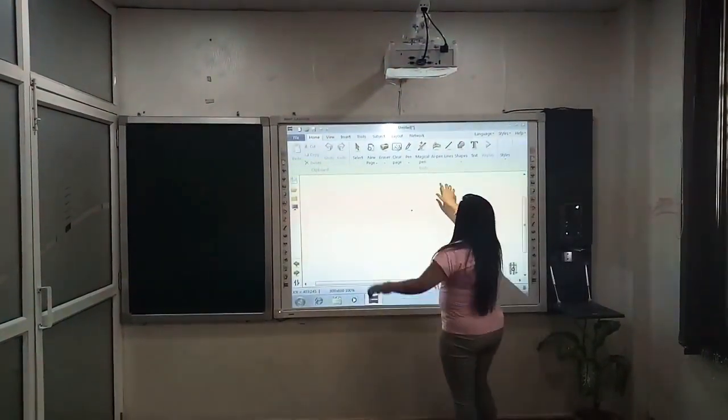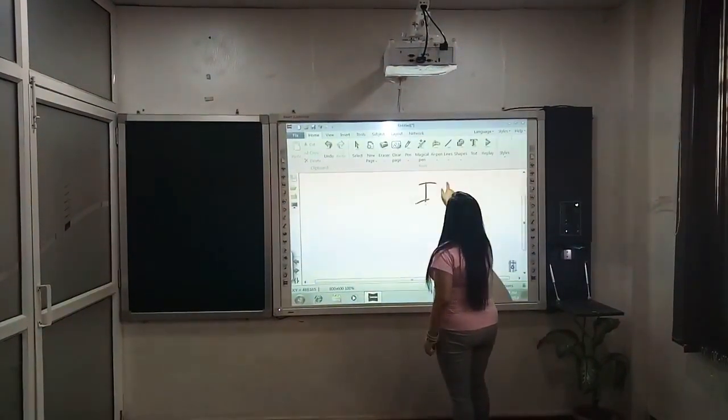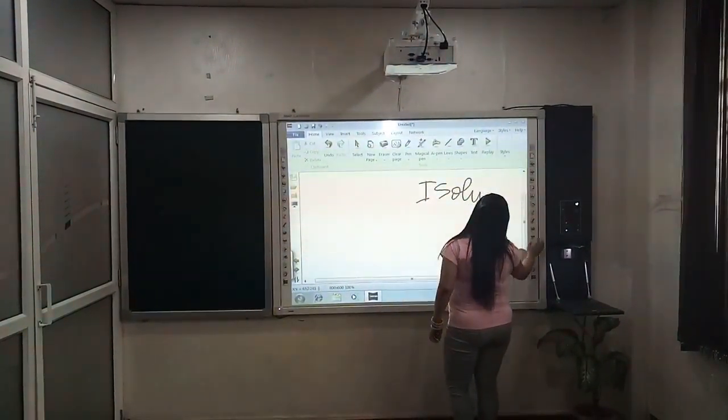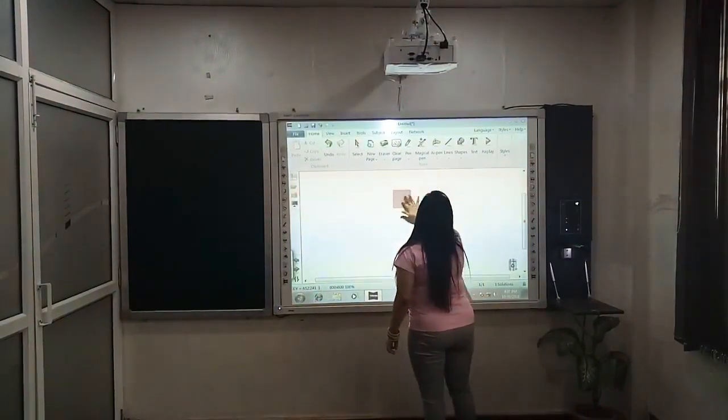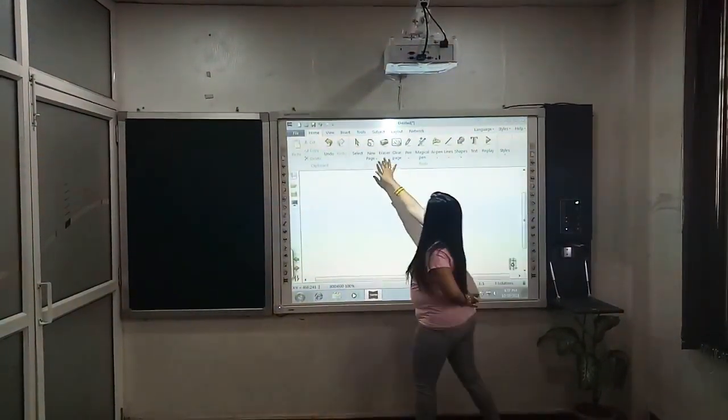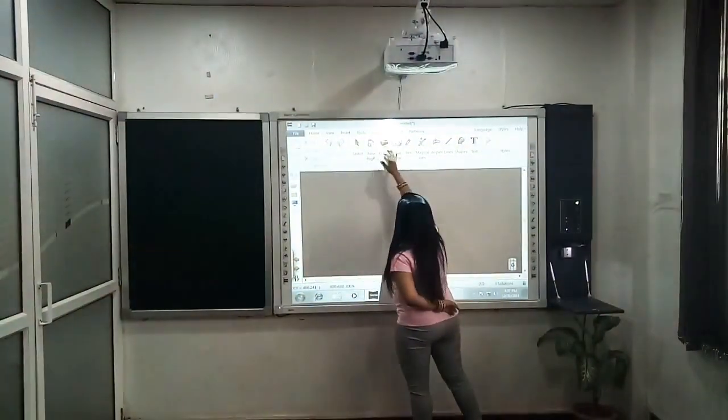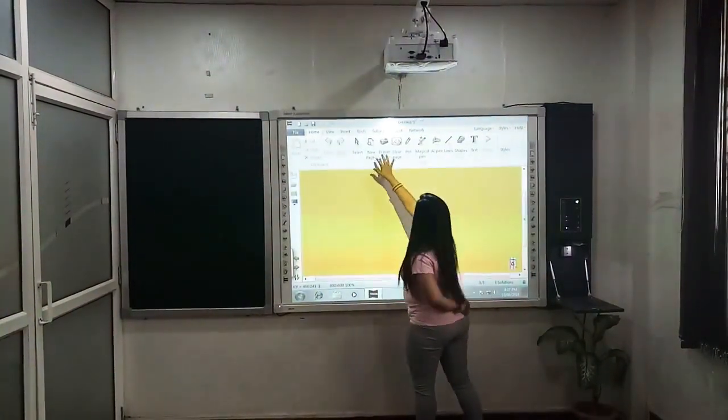By default there is a pen. You can write in this way. And there is an eraser. You can select from the shortcut key also. And here we have different kind of pages: white page, black page, colored page. In this way, it is colored page.